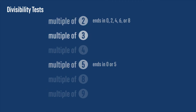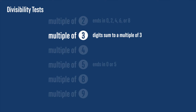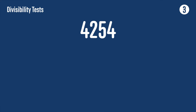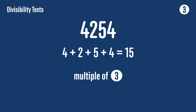Next we'll look at divisibility by 3, and this is one of the most used results in all of the maths challenges, so pay close attention. A number is divisible by 3 if the digit sum of that number is divisible by 3. The digit sum is just the sum of the digits of the number. If we take the number 4,254, its digit sum is 4 + 2 + 5 + 4 = 15. The digit sum test tells us that 4,254 is a multiple of 3 because its digit sum, 15, is also a multiple of 3.